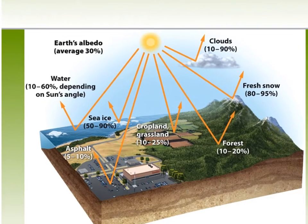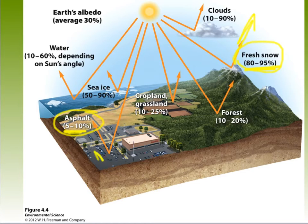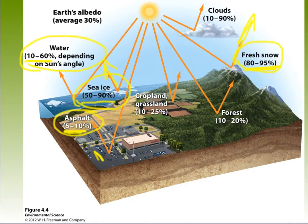We also talked about albedo. High albedo, like fresh snow, reflects 80 to 95 percent of solar energy. Low albedo, like asphalt, reflects only 5 to 10 percent — which is why the asphalt in a parking lot gets very hot. Sea ice is a very important topic because it reflects 50 to 90 percent of solar energy, but as we lose more sea ice year to year in the Arctic, that energy is instead absorbed by water, which has a much lower albedo.